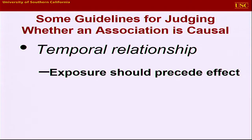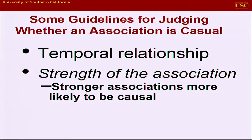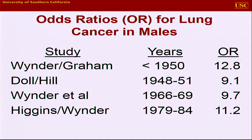Just as a reminder, these guidelines worked well for tobacco smoking. Exposure should precede effect — that was certainly easy for tobacco: people smoke for a long time and then get lung cancer. And then strength of association: stronger associations are more likely to be causal, in part because other explanations can be set aside. Going back to the earliest studies — Wynder, Graham, Doll, Hill — you can see how strong the association of smoking with lung cancer was. In fact, some of these studies were done before the odds ratio was actually described, but very strong associations.